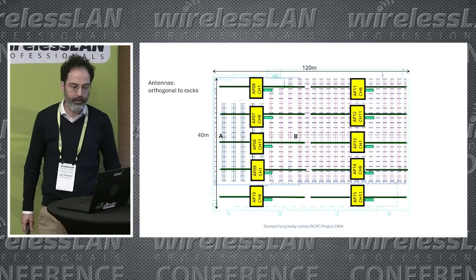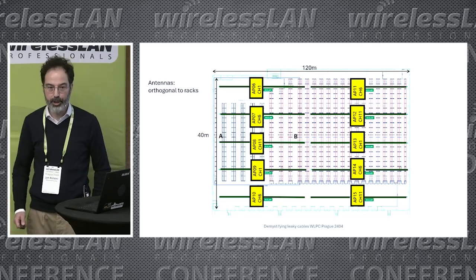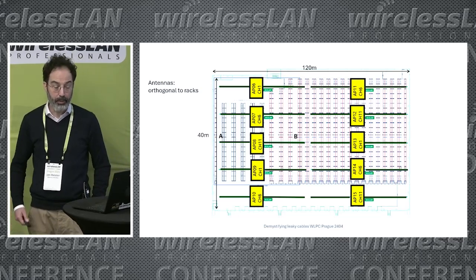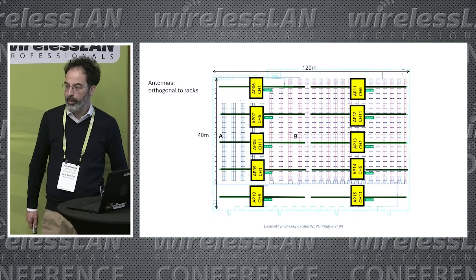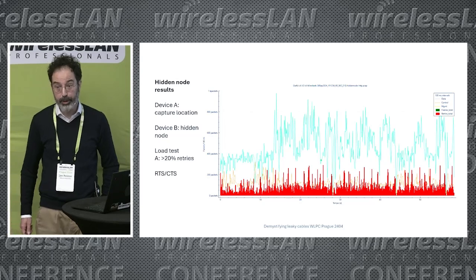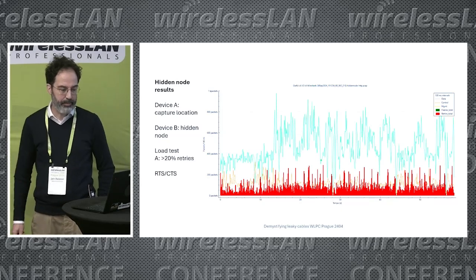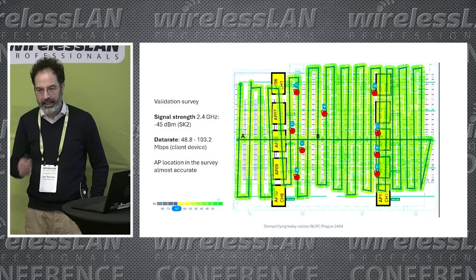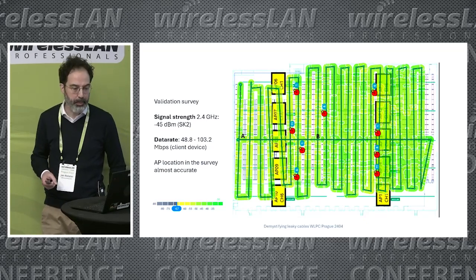The most obvious issue is a perfect example of a hidden node problem. Positions A and B in the floor plan cannot hear each other because they have six or seven shelves between them, causing retransmissions without being able to coordinate transmissions. We tested this and reproduced it, getting more than 20% retries. The network was protected with RTS and CTS, but still produced this result. Analyzing with survey software from Ekahau resulted in the access point positions being mapped surprisingly accurately.